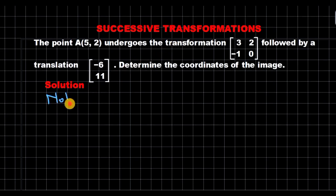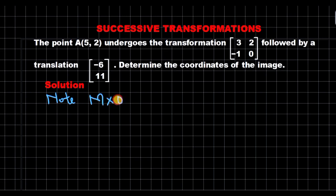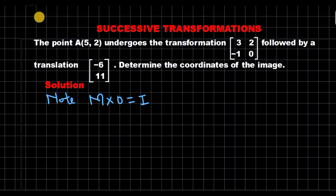So for the first transformation, if we are given the transformation matrix and the object point, then if you pre-multiply the position vector of the object point by the transformation matrix, that should give us the position vector of the image point.